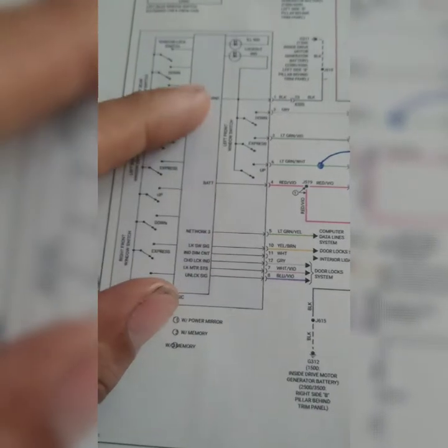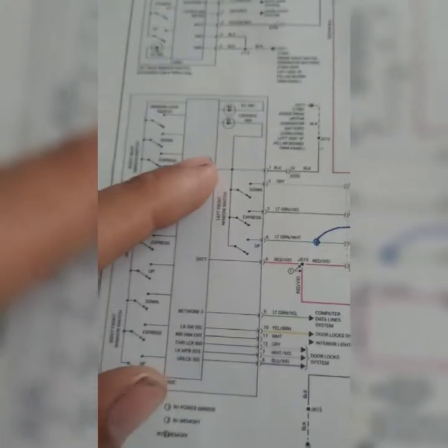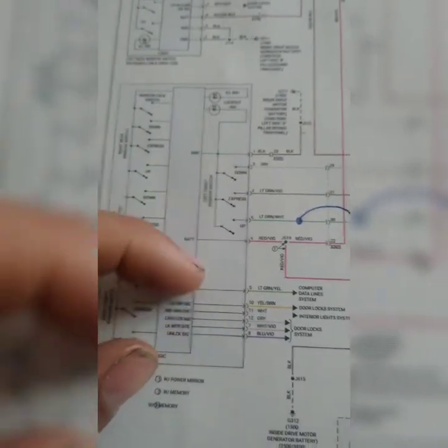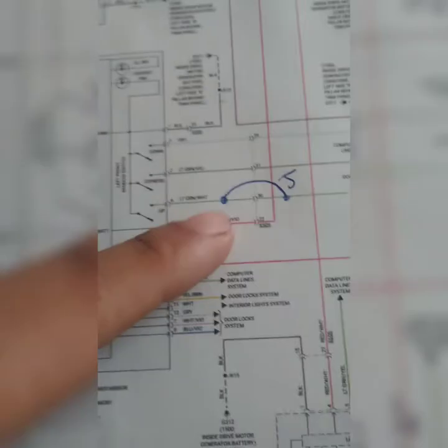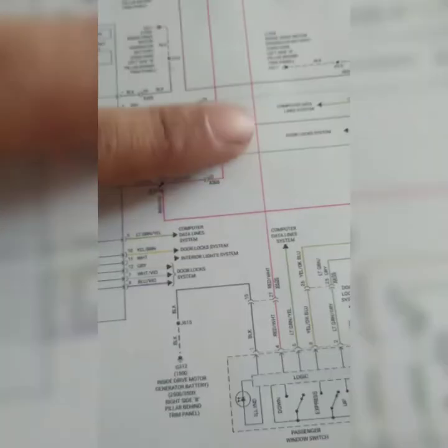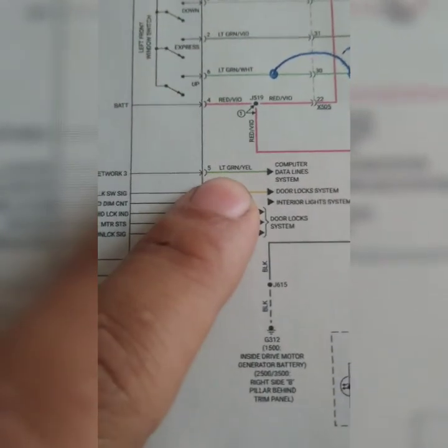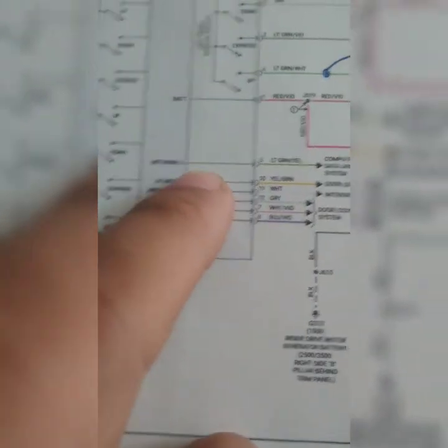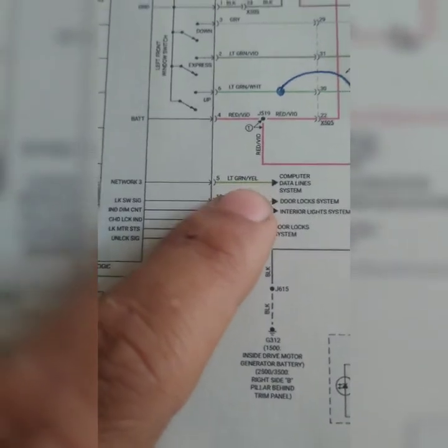So the gist of it is, without this data signal coming into here, nothing here is going to work. It's going to have power to it, it's going to have ground, but nothing here is going to work because this guy here is broken. Again, don't look at this, this is wrong. That was my bad. This is the point right here.